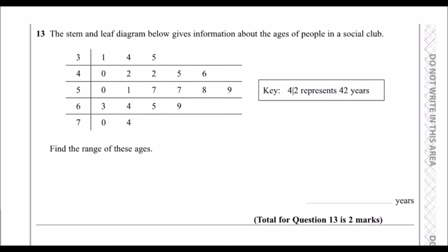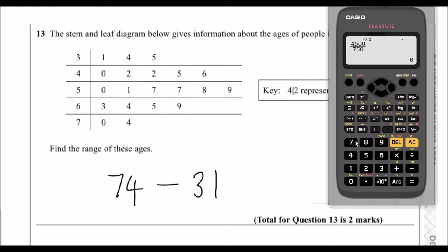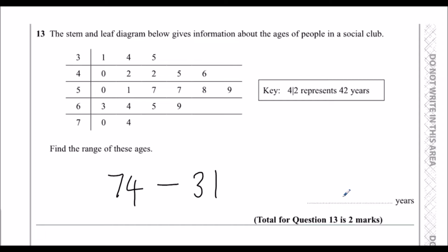Question 13: the stem-and-leaf diagram gives information about the ages of people in a social club. Find the range of ages. The oldest person is 74 and the youngest is 31, so the range is 74 minus 31, which is 43.